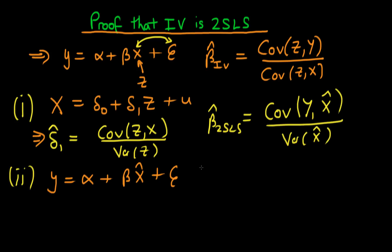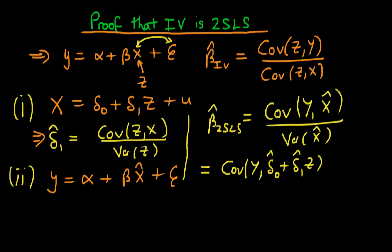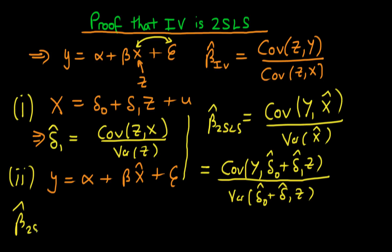We can substitute in for what x̂ actually is using the first stage. So this is equivalent to the covariance of y with (δ̂₀ + δ̂₁·z) all divided by the variance of (δ̂₀ + δ̂₁·z).